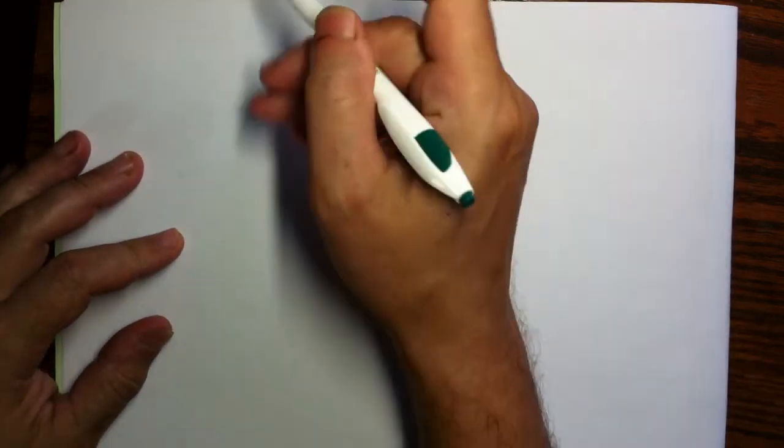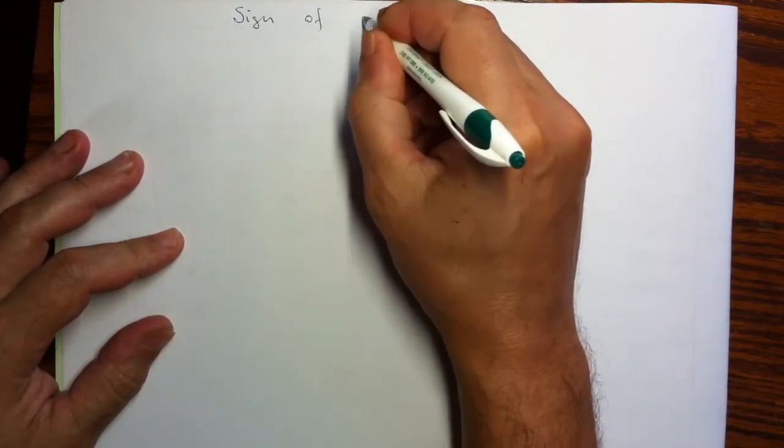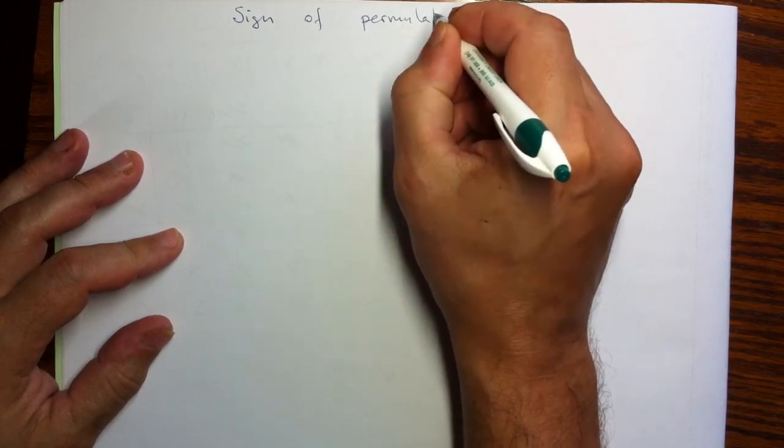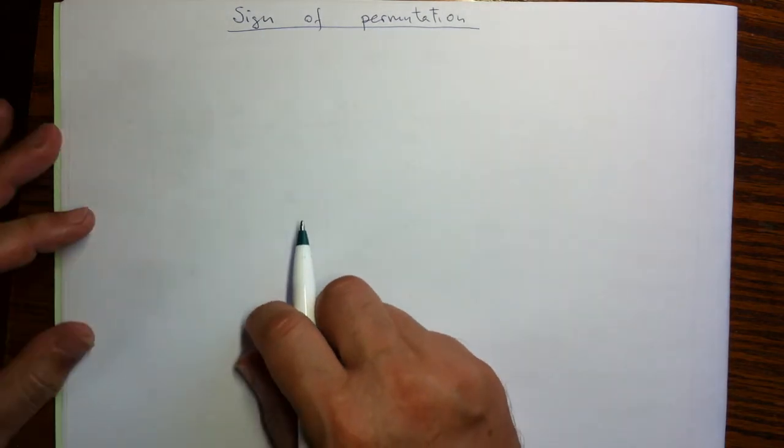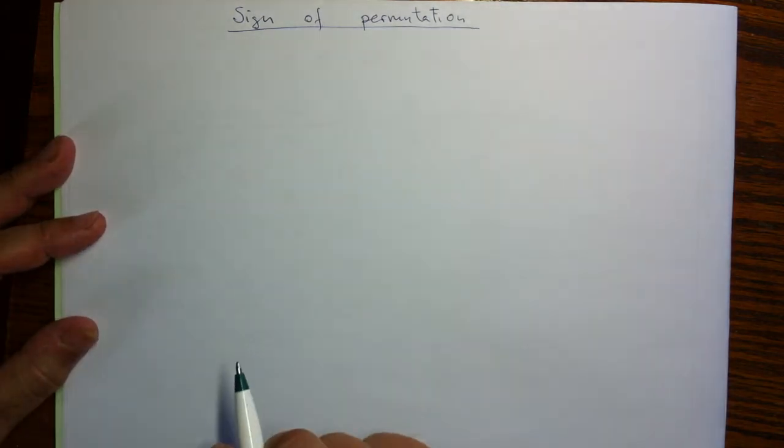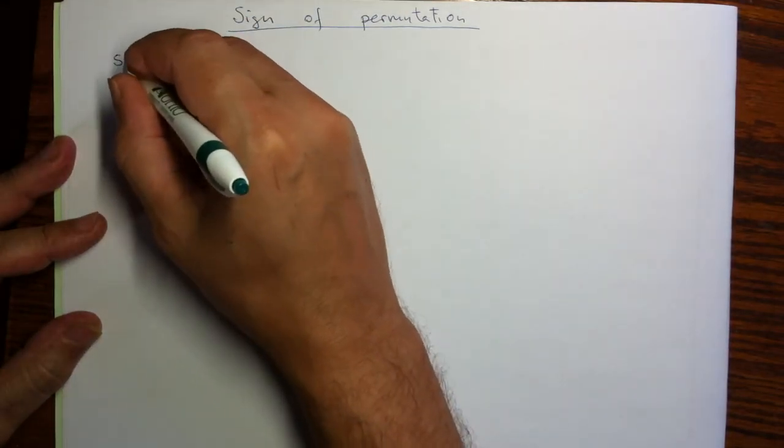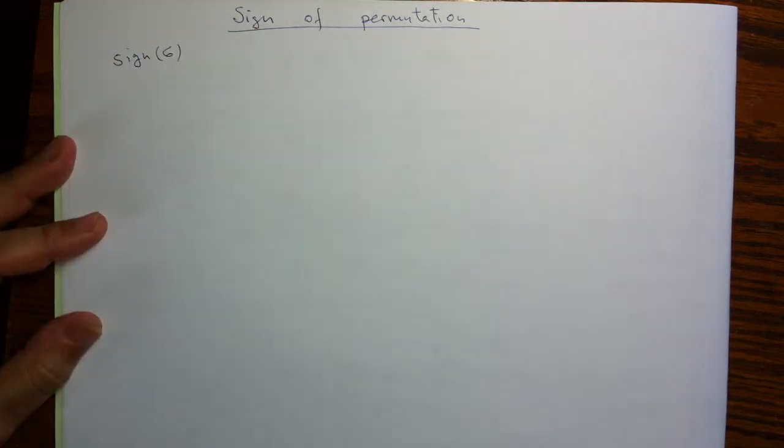Hello. Here we'll talk about what is called sign of a permutation. Permutations are not all made equal. Some are more even, some are odd. So let's start with a sort of practical, more or less, way of computing the sign of a permutation of n things.